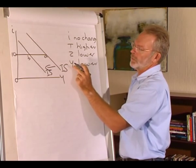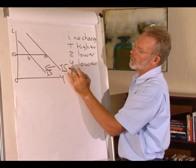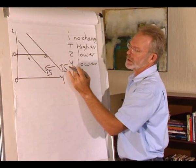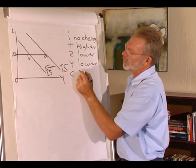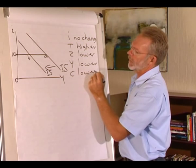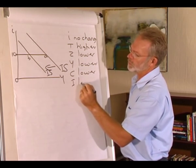Consumption spending and investment spending is a function of the level of production, therefore C will also be lower. And investment spending will also be lower.